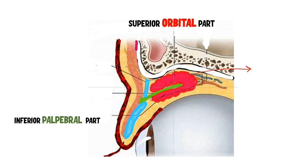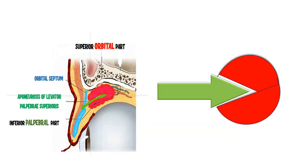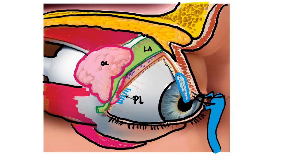So here we have the upper orbital lobe and the inferior palpebral part. The green color represents the aponeurosis of the levator palpebrae superioris which is dividing the lacrimal gland, and the orbital septum in blue shows that the lacrimal gland is situated behind the orbital septum. The levator palpebrae superioris aponeurosis splits only the anterior half of the lacrimal gland; the posterior half is not divided into superior and inferior lobes. The orbital lobe is the larger lobe and the palpebral lobe is the smaller one situated below the levator aponeurosis.